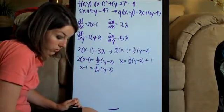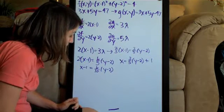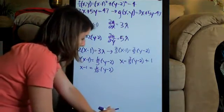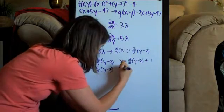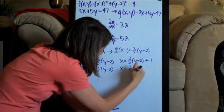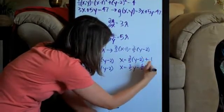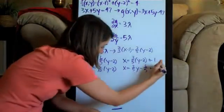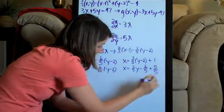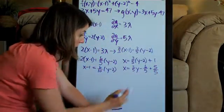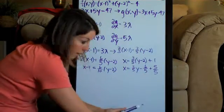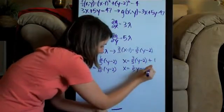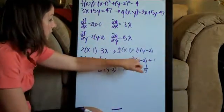We have now solved for a relationship between x and y. I'm going to simplify this because we want this relationship to be as simple as possible. We'll end up with x equals 3 fifths y minus 6 fifths plus 1. If we turn 1 into 5 fifths so that we have common denominators, minus 6 fifths plus 5 fifths is going to be minus 1 fifth.